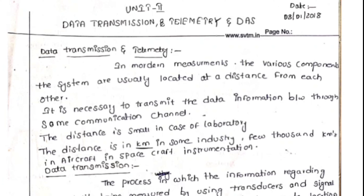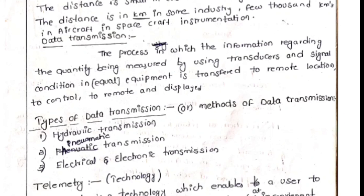Data transmission is the transmission of data, whereas telemetry means telemetering — metering from a far distance. Data transmission is the process where information regarding the quantity being measured, using transducers and signal conditioning equipment, is transferred to a remote location for control and display.